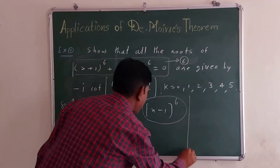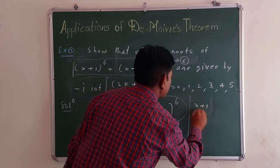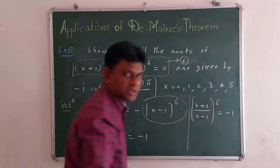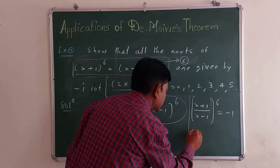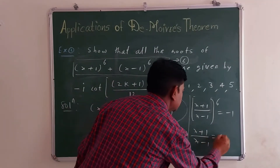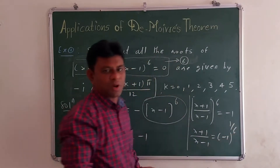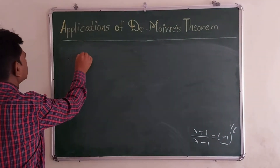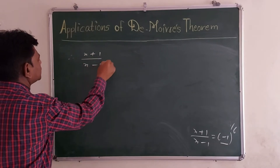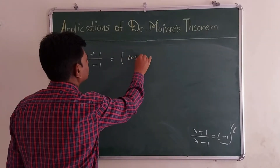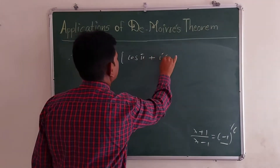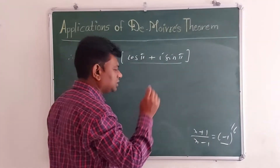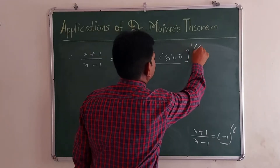Dividing this whole equation by (x-1)^6, we get ((x+1)/(x-1))^6 = -1. We write this as ((x+1)/(x-1)) = (-1)^(1/6). We write -1 in trigonometric form: cos π + i sin π = -1. Therefore, this represents (-1)^(1/6).